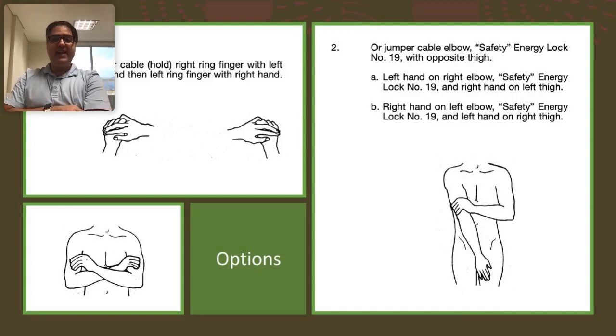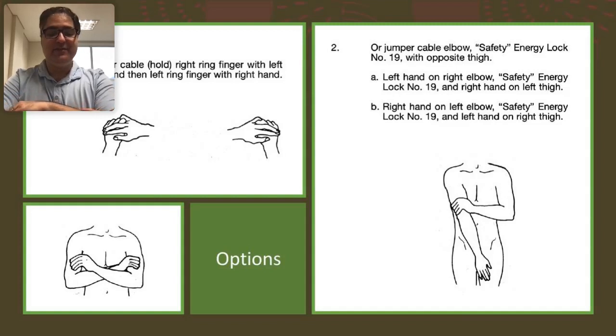Another option is you can place your left hand on your right elbow and then your right hand on your left thigh. This would be 19 with opposite high one. You have four options to choose. I invite you to join me. Let's all practice for a few moments what feels more comfortable and suitable for you right now. I'm going to hold my 19s, and let's all close our eyes for a moment.